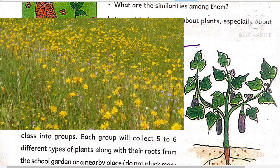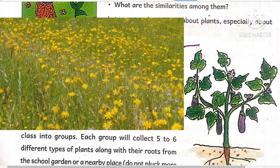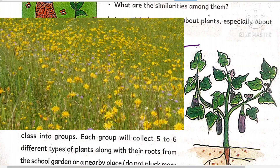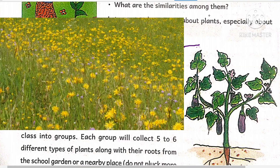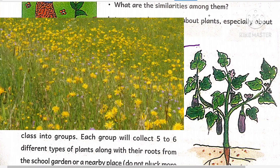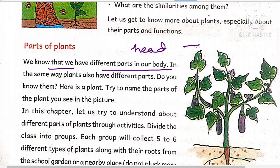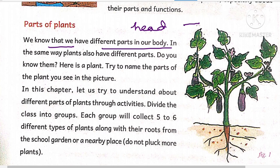We know that we have different parts in our body — head, neck, hands, stomach, trunk, and legs. Similarly, plants also have different parts like us. Take this example of a plant: it contains roots, stem, fruits, flowers, leaves, and branches. These are all the parts present in the plant.